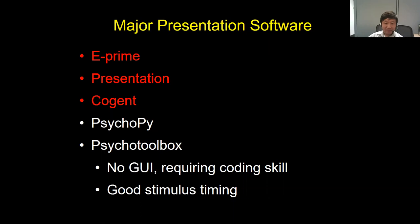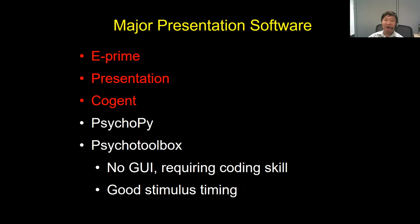Psychtoolbox is pretty good at seamless timing — the developer emphasizes that a lot. But for our purpose in fMRI experiments, that's 99% of the time not critical, because our signal is too slow. We get one data point per one or two seconds. So timing problems of 10, 20, or even 100 milliseconds normally don't matter. But for EEG, that may be a huge problem.